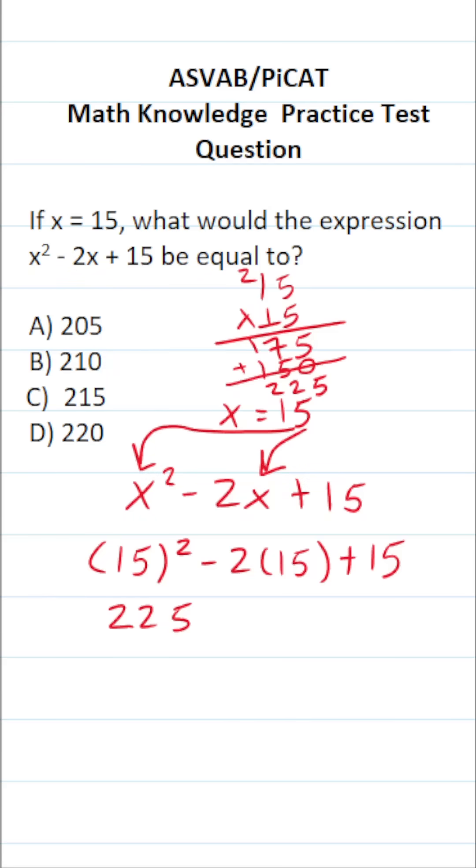So that's how we get 225 minus 2 times 15 is going to be 30 plus 15. Now some of you might be stuck at this point in terms of knowing what operation to do next. Remember, the order of operations says this: you work out the expression according to the order of operations, that is, please excuse my dear aunt Sally.